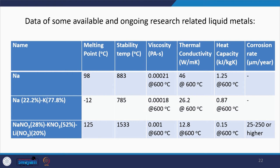Data pertaining to available and ongoing research on liquid metals—such as sodium, sodium-potassium, and lead-bismuth—covers melting point, stability, viscosity, thermal conductivity, heat capacity, and corrosion rate. The operating temperature ranges are notable: 98 to 883°C for sodium, −12 to 785°C for NaK (a range of ~797°C), and 125 to 1533°C for LBE. While these ranges are very promising, factors such as corrosion effects, availability, and cost all need to be addressed.